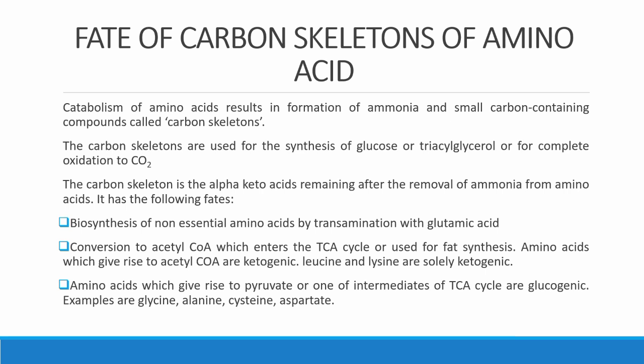The fate of the carbon skeleton of amino acids: when proteins are taken into the body, they are broken down to amino acids. The amino group is then removed and ammonia is formed. Ammonia is toxic to the body, so it has to be converted to a less toxic substance that can easily be excreted. That substance is urea, which is less toxic and water-soluble, allowing it to be excreted more easily.